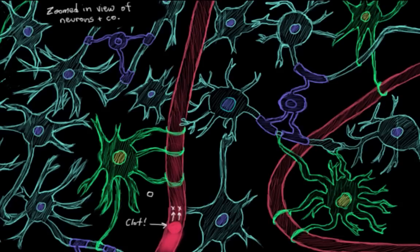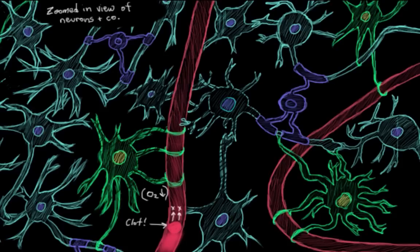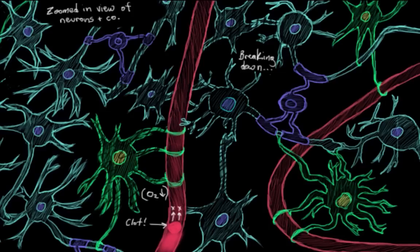Without enough oxygen, neurons can start to break down as a result of a process called the ischemic cascade. So that's obviously not good, our neurons breaking down, but to sort of add insult to injury here, there's actually a few other events that happen after our neurons start breaking down during the stroke.